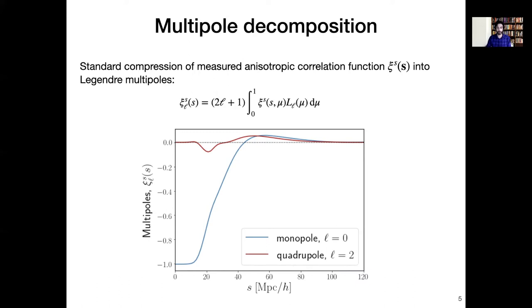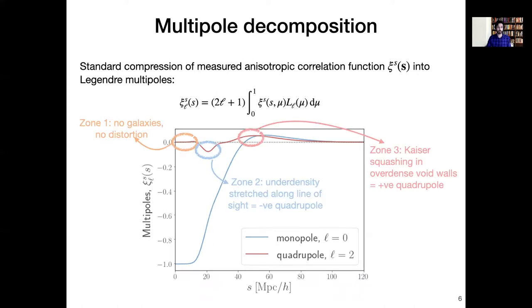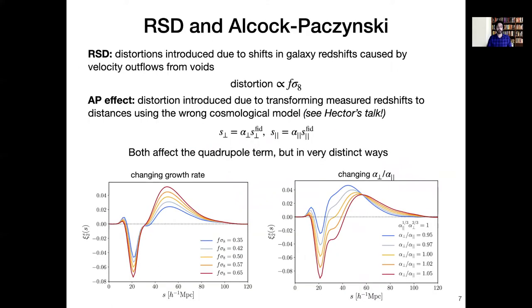Now you can understand a little bit of the physics going on here just by reference to these three zones. So zone one is right in the center of the void where you have no galaxies. If you have no galaxies then your correlation function is exactly minus one and so you have no redshift space distortions either. And then as you move a little bit further out where you're still deep in the underdensity, intuitively you expect a stretching effect along the line of sight and that is exactly what you see. That stretching corresponds to a negative quadrupole and that's driven by outflow velocities from the void. And if you move even further out, then you come across the region where you have large overdensities in the void walls, and in this region you see a Kaiser squashing effect that leads to a positive quadrupole. So those are the physical effects that go into this.